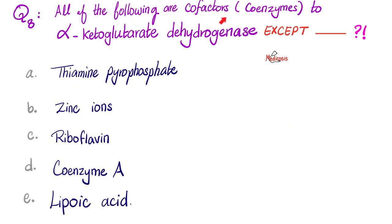Question number 8. All of the following are cofactors or coenzymes to alpha-ketoglutarate dehydrogenase except blank. Is it thiamine pyrophosphate, zinc ions, riboflavin, coenzyme A, or lipoic acid? Please pause. Let's talk about this. The coenzymes or cofactors to alpha-ketoglutarate dehydrogenase are the same ones as those for the enzyme pyruvate dehydrogenase complex. And they include my Teflon company.